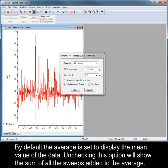By default, the average is set to display the mean value of the data. Unchecking this option will show the sum of all the sweeps added to the average.